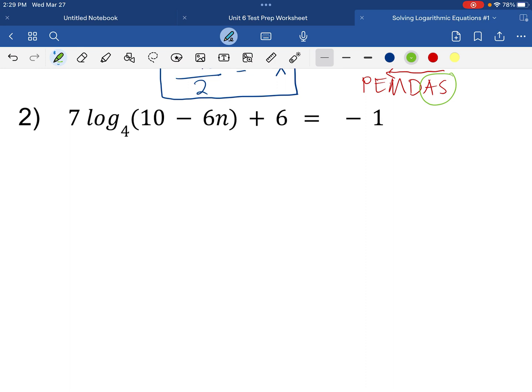However, we have here a positive 6. So we want to get rid of that positive 6 by subtracting 6 on both sides.